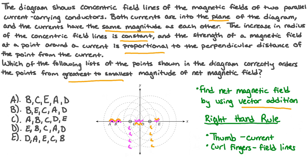Let's look at how both fields are oriented at the five points on our x-axis. At positions A and B, both fields are pointing towards the top of the screen, so the magnitudes will be added together. At positions C and D, the field lines are pointing in opposite directions — yellow is pointing to the top of the screen and pink is pointing to the bottom — so we would subtract the magnitudes. Both fields are pointing to the bottom of the screen at point E, which means we will once again add the magnitudes together.